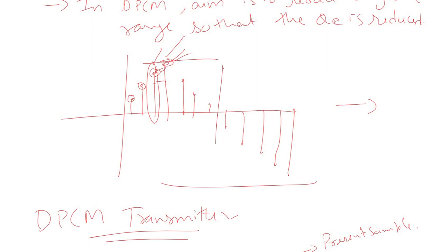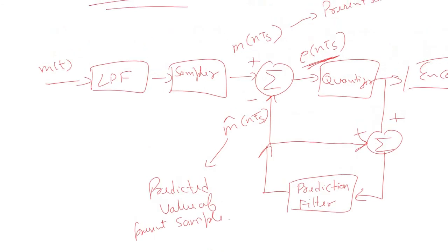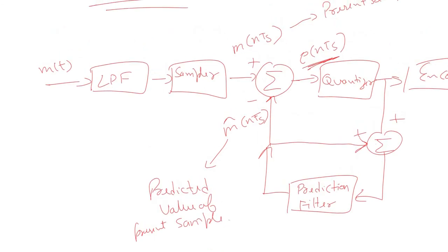In DPCM, by feeding the prediction error rather than the original sample to the quantizer, the dynamic range is greatly reduced. Since the prediction filter accurately predicts the present sample from past samples, the error e(nTs) is very small, resulting in a much smaller dynamic range and thus reduced quantization error compared to standard PCM.